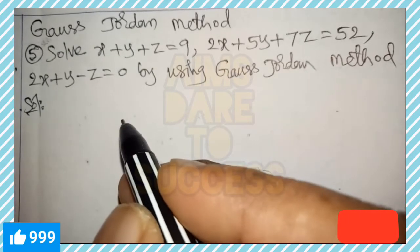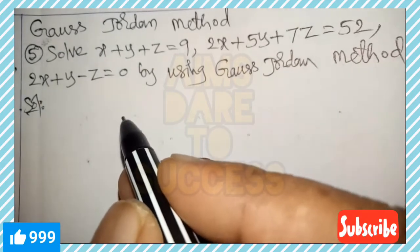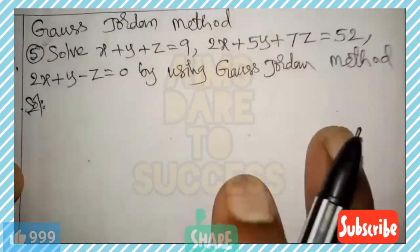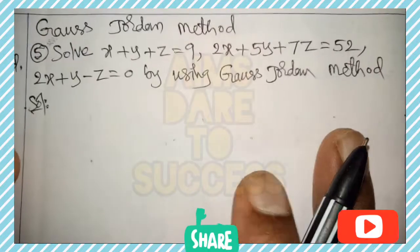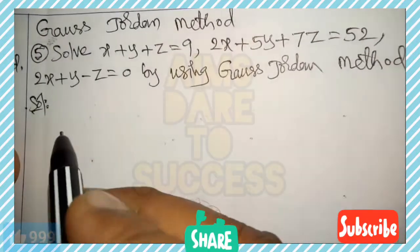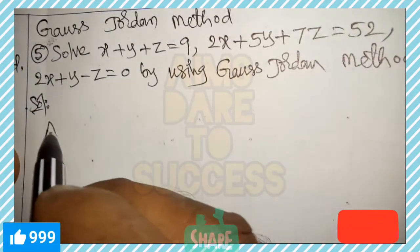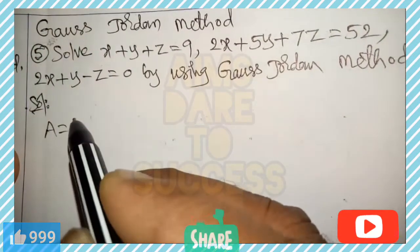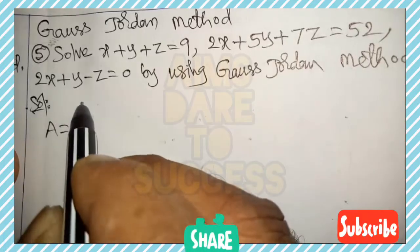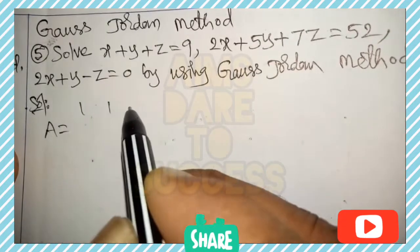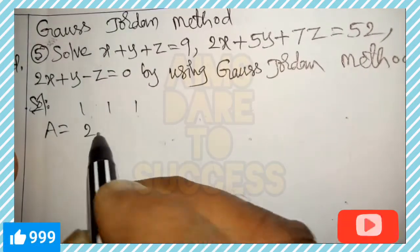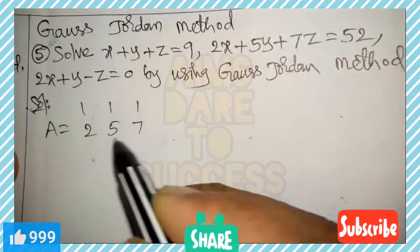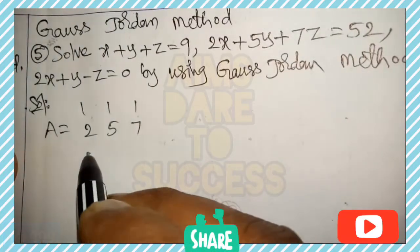Gauss-Jordan method — a very important previous question. Solve: x + y + z = 9, 2x + 5y + 7z = 52, 2x + y - z = 0, by using the Gauss-Jordan method.